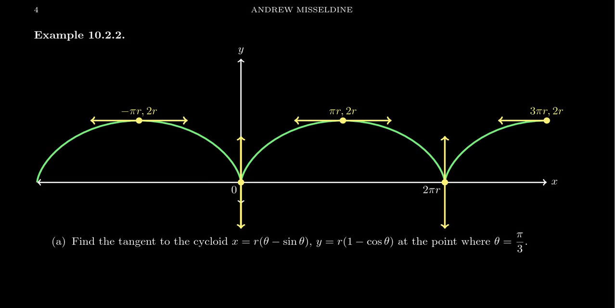So recall the notion of the cycloid that we had introduced before. If a cartwheel is spinning and a fixed point on that circle is determined, what path does it trace throughout space? You can see that path right here, illustrated in green. It makes these arches over and over and over again.